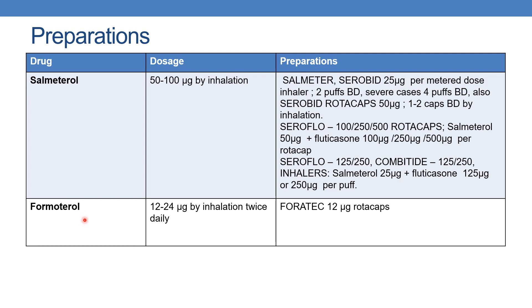The next drug is formoterol. The dose is 12 to 24 mcg by inhalation twice daily. The preparation is Foratec 12 mcg rotacaps.